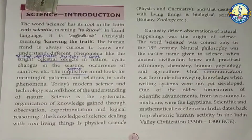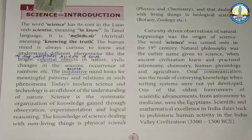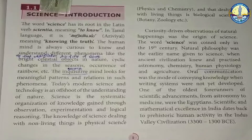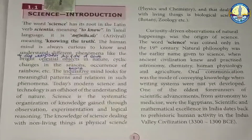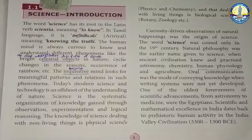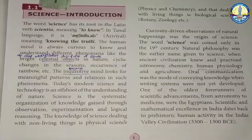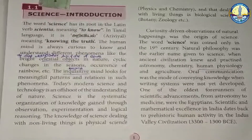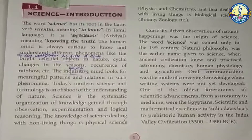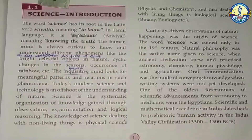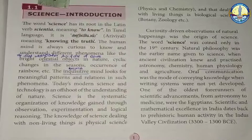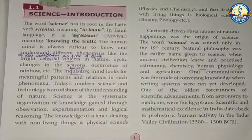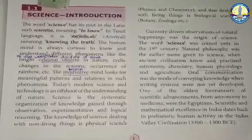The word 'science' has its root in the Latin verb 'scientia,' which means 'to know.' The inquisitive human mind is interested in bright celestial objects in nature, outer space, cyclic changes in the seasons, and rainbows. The inquisitive mind looks for meaningful patterns and relations in such phenomena.